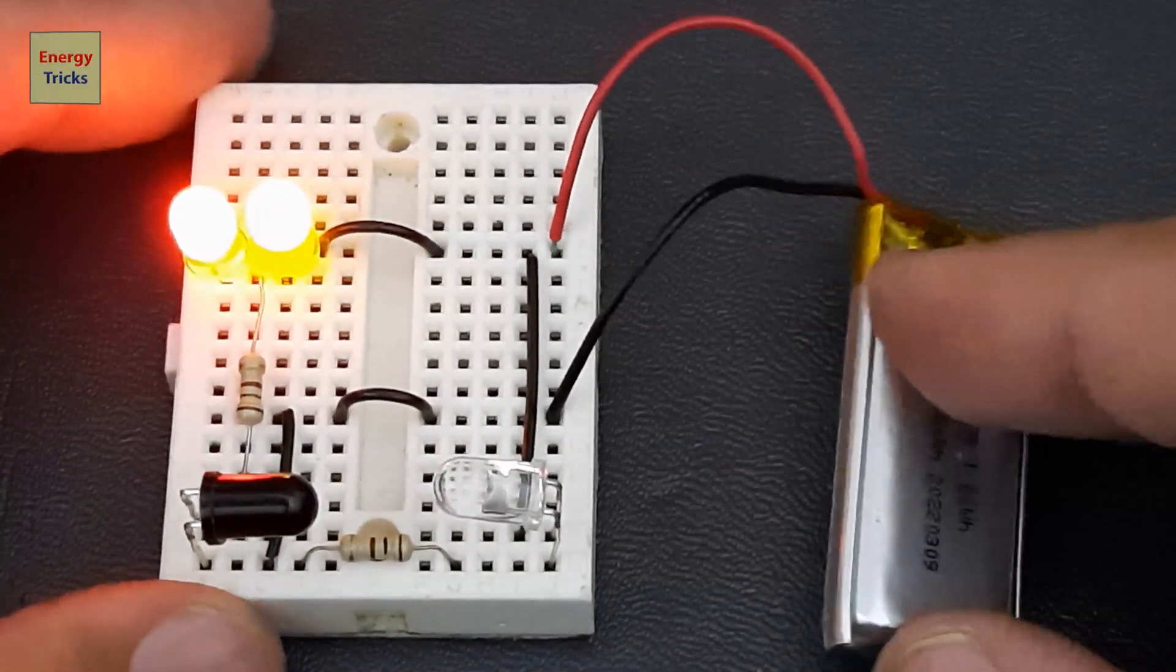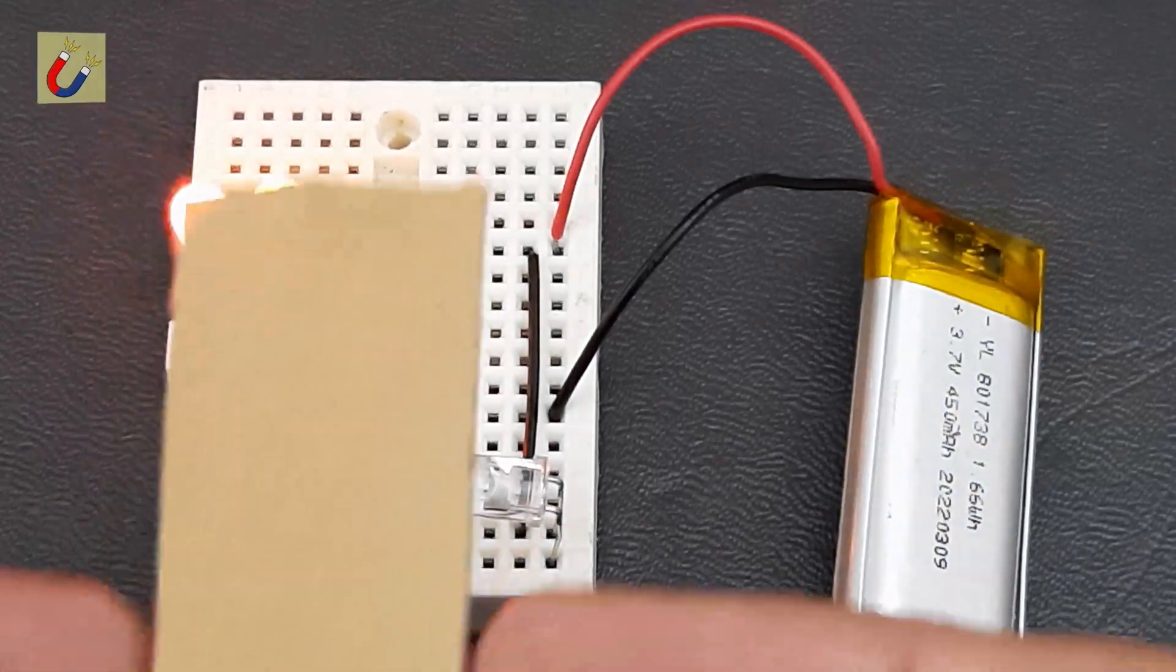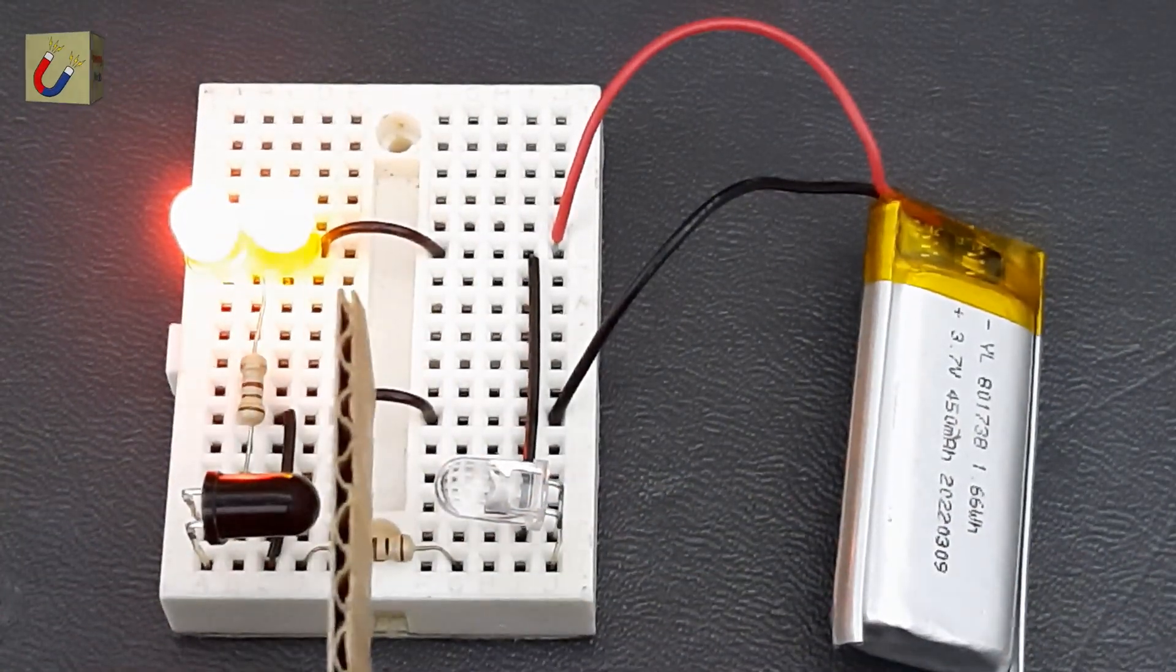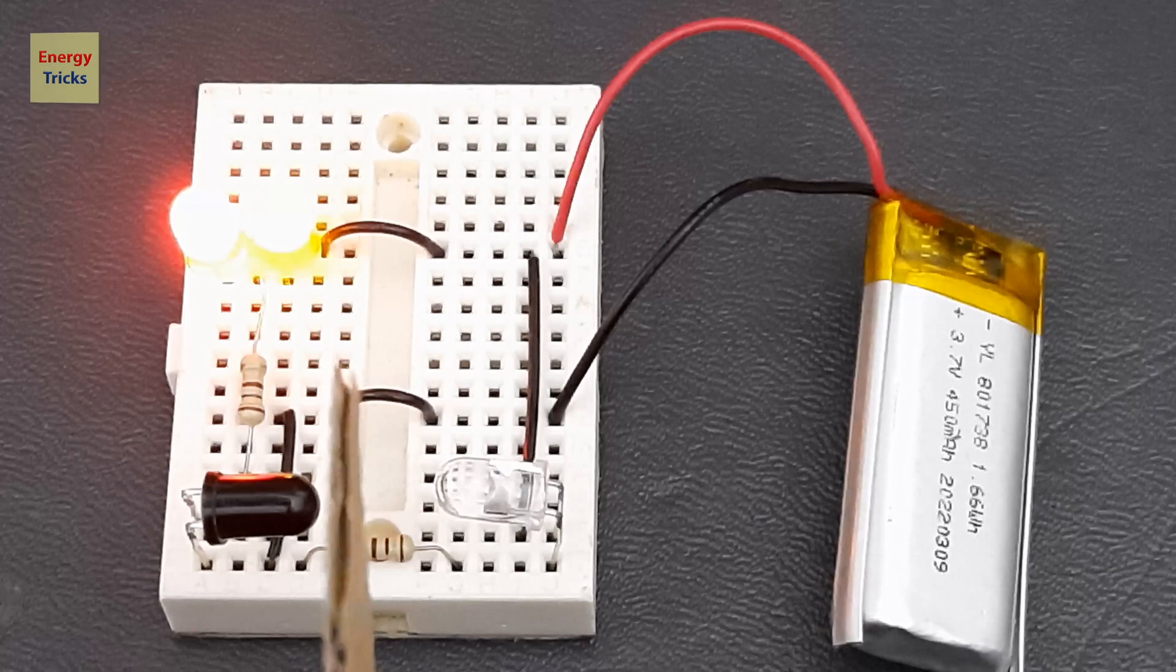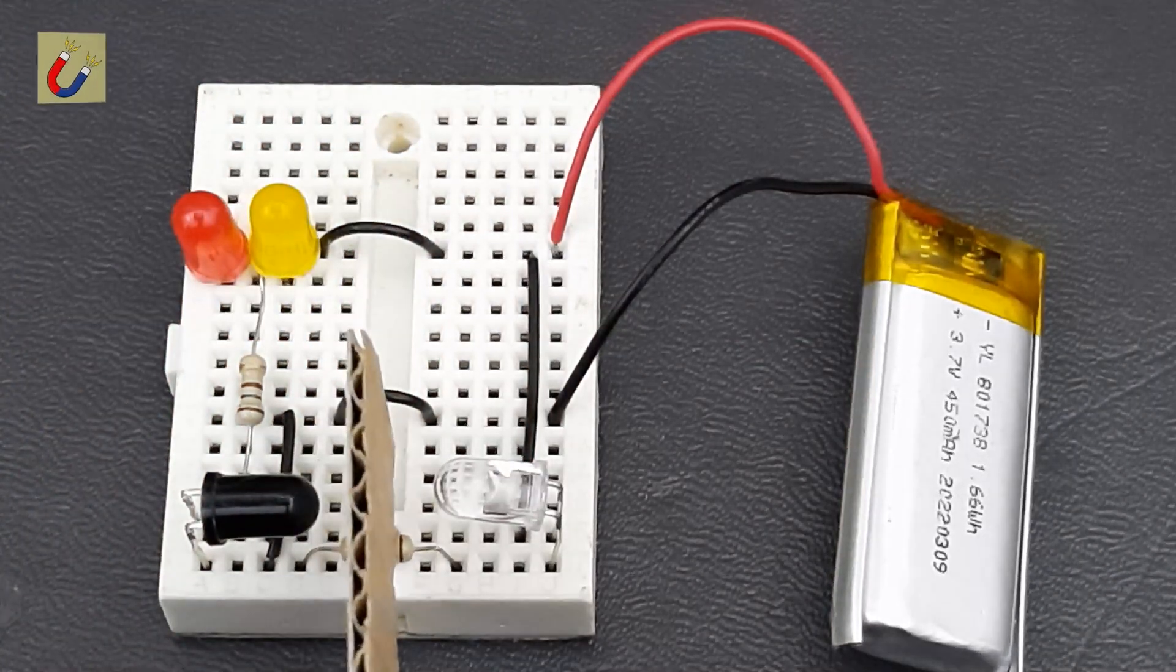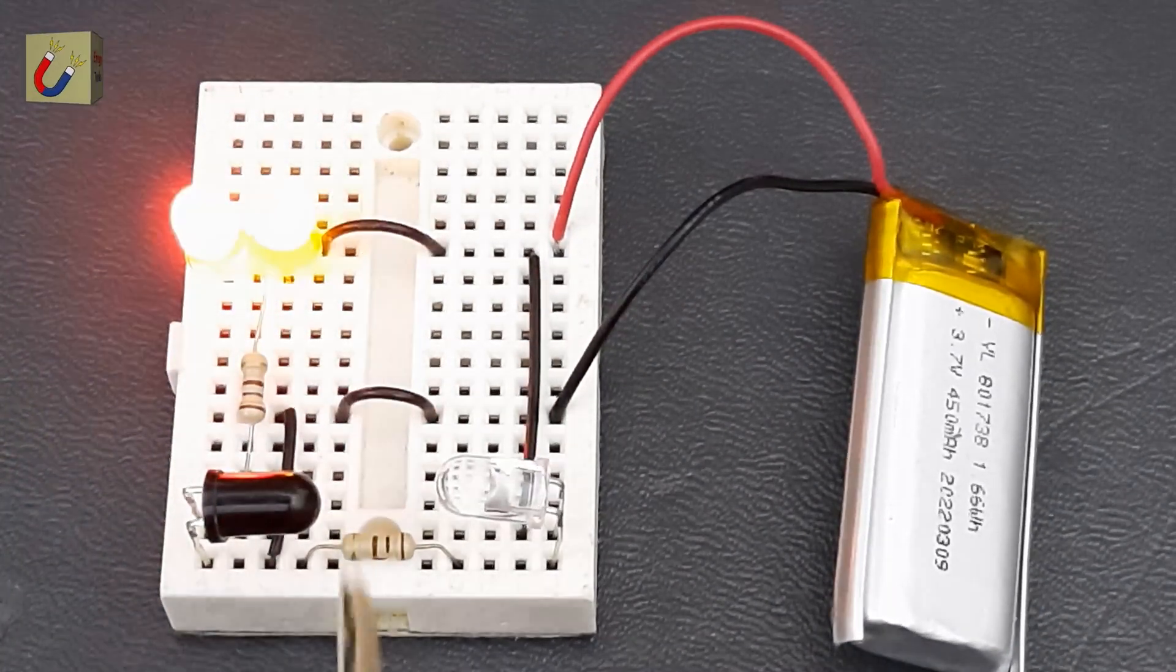Now, to test the setup, bring an obstacle between the IR transmitter and IR receiver. When the beam is interrupted, you'll notice that both LEDs will turn off, showcasing how the circuit detects the presence of an object.